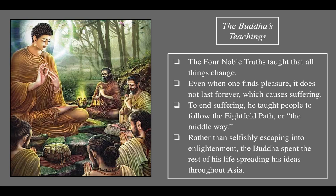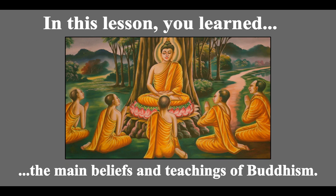That's the Eightfold Path. The Four Noble Truths taught that all things change — even when one finds pleasure it does not last forever, which causes suffering. To end suffering, the Buddha taught people to follow the Eightfold Path, or the Middle Way. Rather than selfishly keeping his enlightenment to himself, he chose to spend his life teaching these ideas to others so they could do the same. He spread his ideas throughout Asia. In this lesson you learned about the main beliefs and teachings of Buddhism.